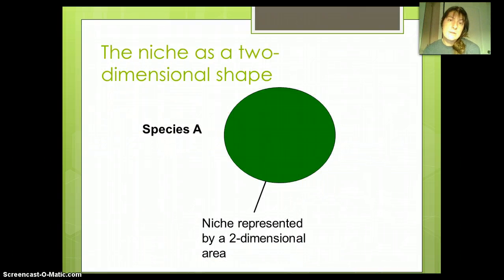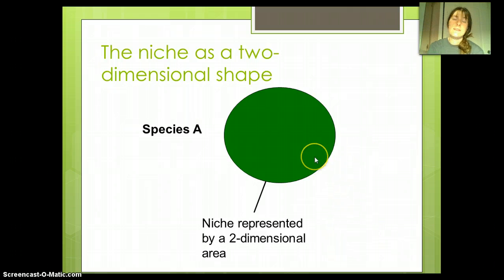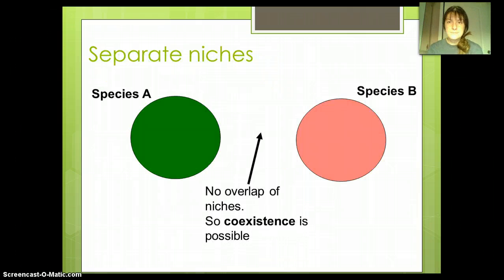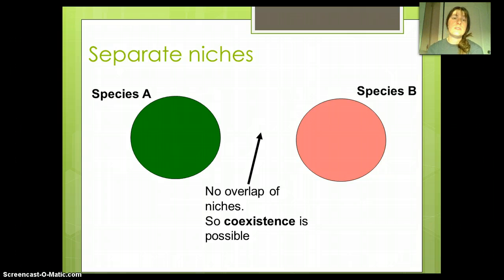Let's talk about niches as a shape. Let's say species A was able to exist in a certain area — and this area doesn't just mean physical area, it also means environmental tolerance, role in the ecosystem, etc. If there's no overlap, if two different species fill different roles and have different needs in the ecosystem, then coexistence is possible. Those would be totally separate niches.